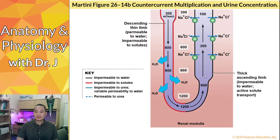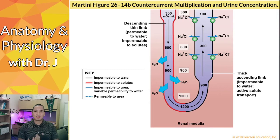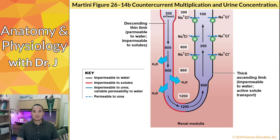The descending limb and ascending limb are actually very different based on what they transport out of the inside of the renal tubule compared to their surroundings. We see this number — 300 milliosmoles per liter. Osmoles refer to how much of a substance is dissolved in the fluid contributing to osmosis, or simply how concentrated something is. As we go down the descending limb from the PCT into the loop, the fluid gets more and more concentrated.